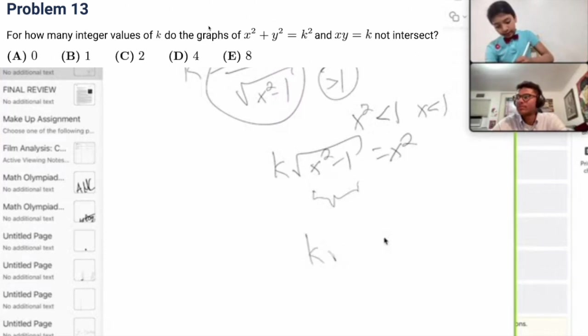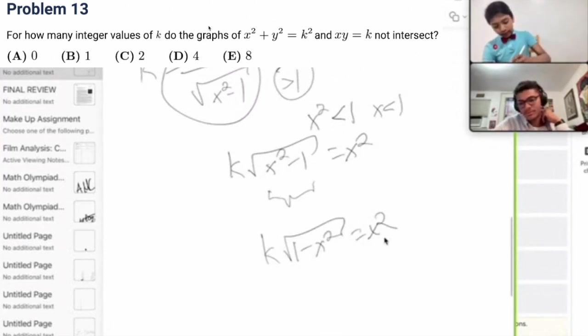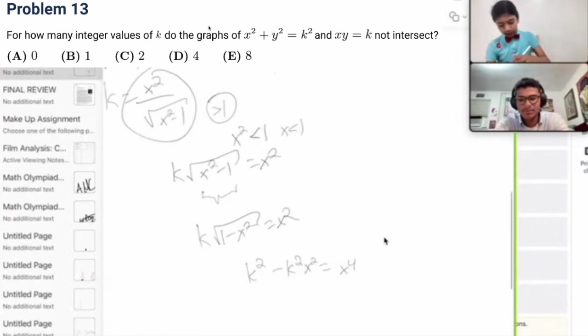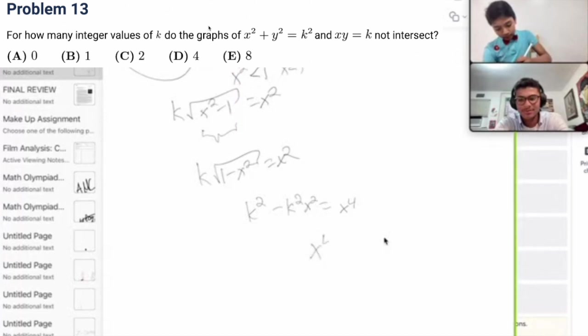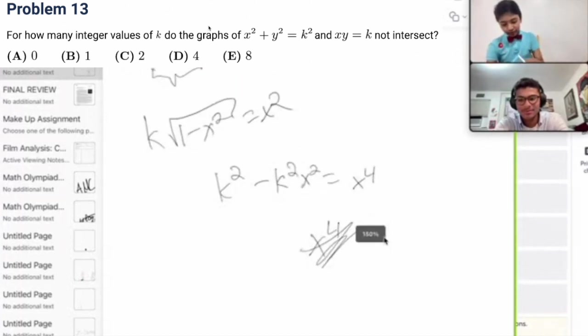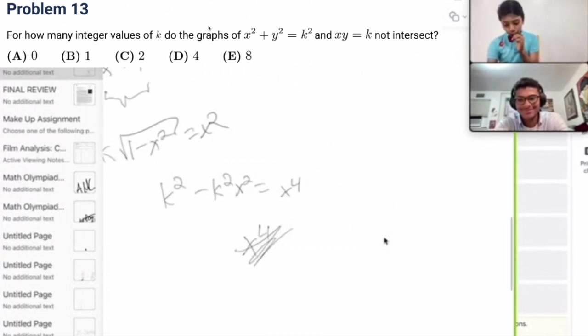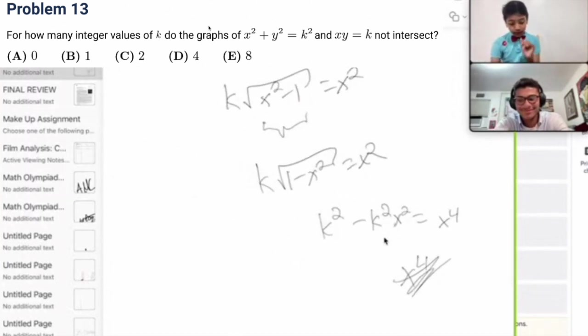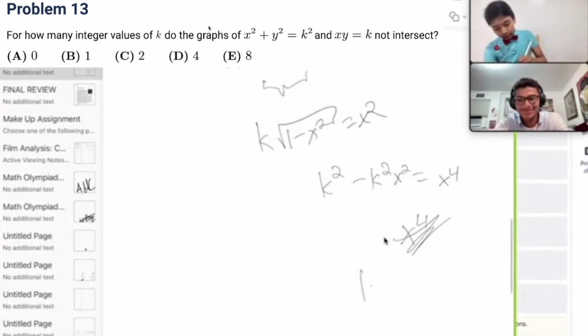Then let's let this be the square root of 1 minus x squared instead. So, that would give me k squared minus k squared x squared is equal to x to the fourth. So, what would that give me? x to the, no, we're not doing that, not today. So that's a pretty tricky problem.